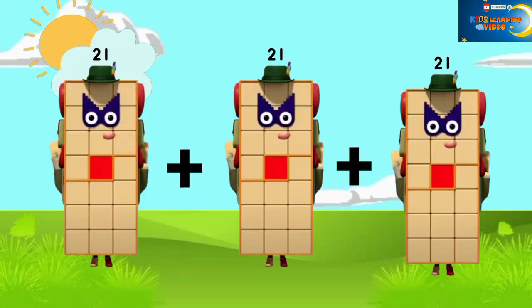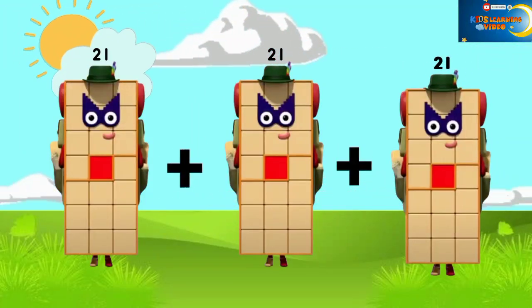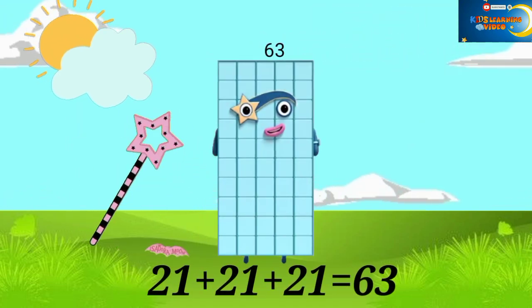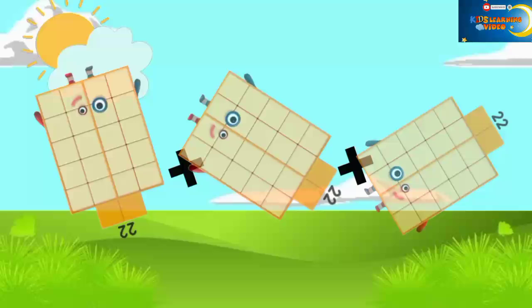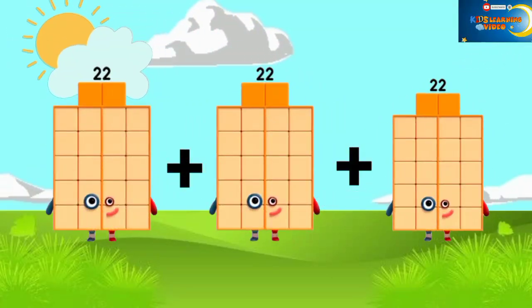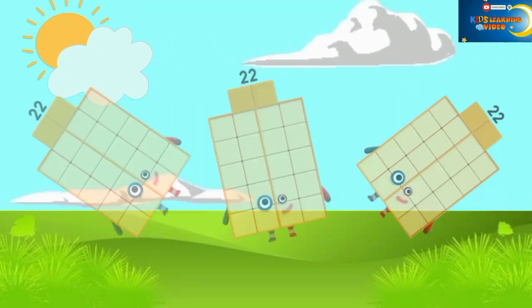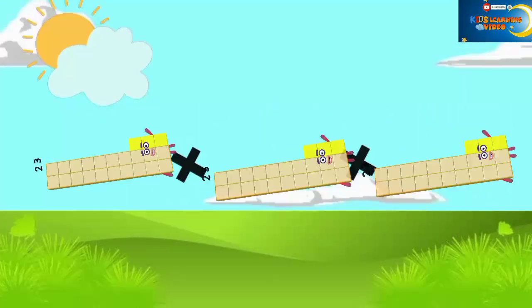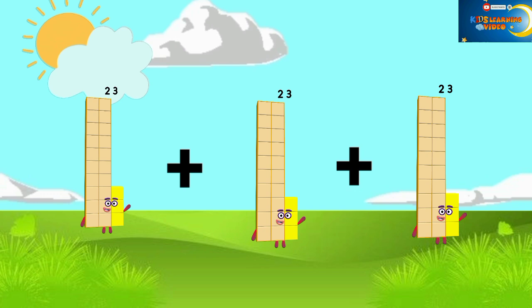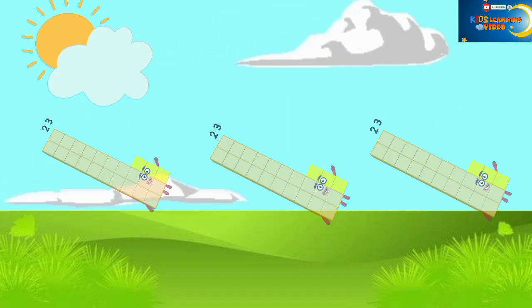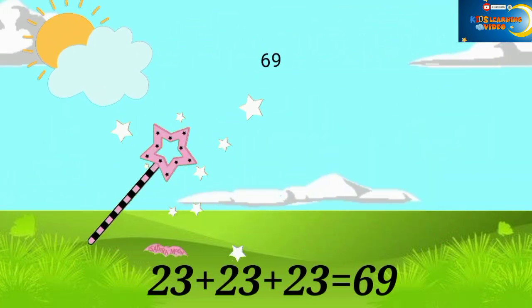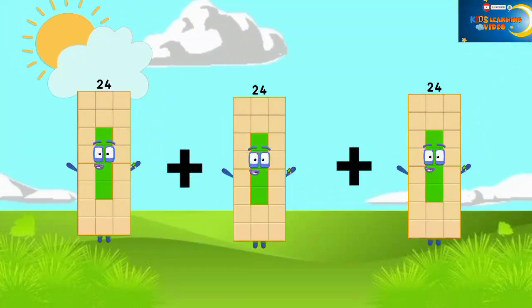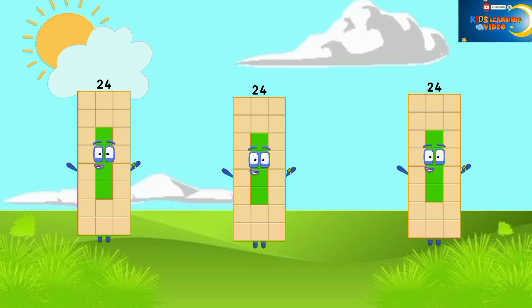21 plus 21 plus 21 equals 63. 22 plus 22 plus 22 equals 66. 23 plus 23 plus 23 equals 69. 24 plus 24 plus 24 equals...